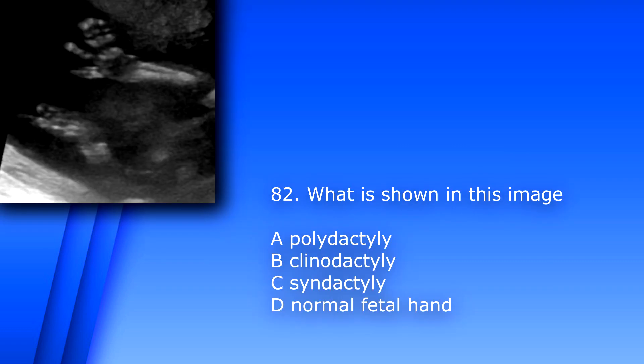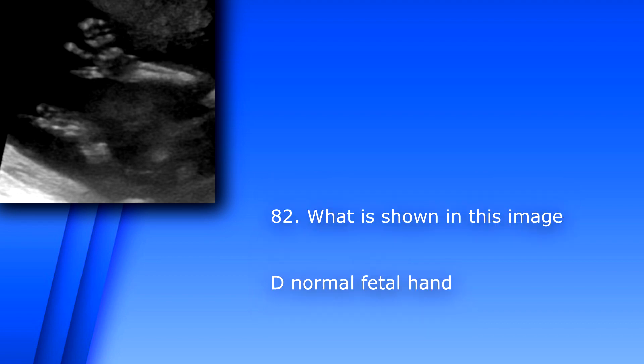Question 82. What is shown in this image? A. Polydactyly. B. Clinodactyly. C. Syndactyly. D. Normal fetal hand. The answer is D, normal fetal hand.